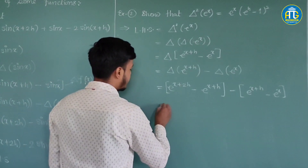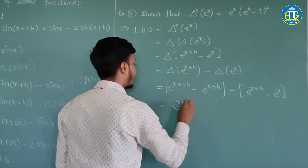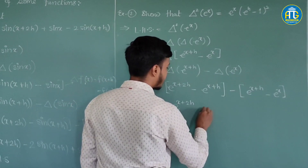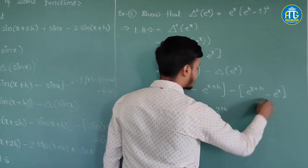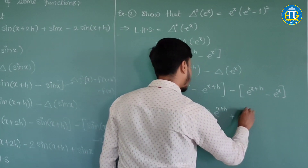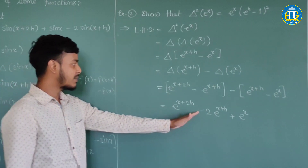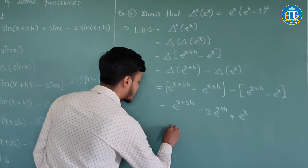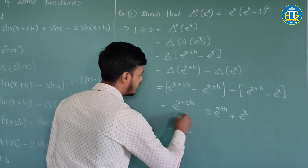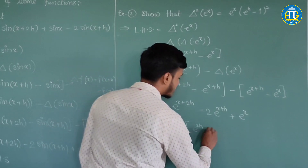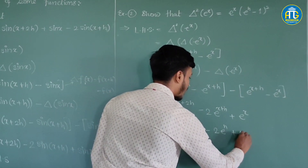Rewriting, this is e^(x+2h) − 2e^(x+h) + eˣ. Now use the laws of indices to take eˣ out as a common factor. What remains inside is e^(2h) − 2eʰ + 1.